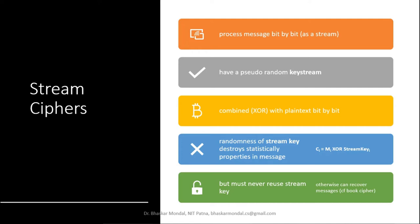We will find the huge use of random number generators in Stream Cipher. So what is Stream Cipher? It is a process that processes messages bit by bit as a stream. That means at the time of encryption, whatever you have as messages, that will be taken bit by bit by the algorithm and encrypted. Sometimes it may be a set of bits at a time, a byte at a time.